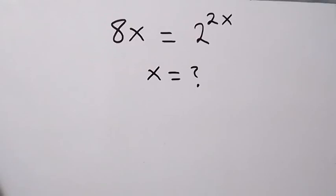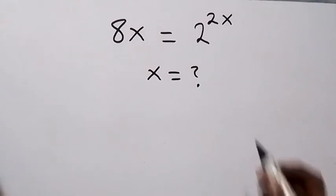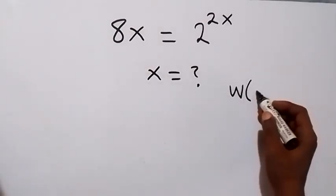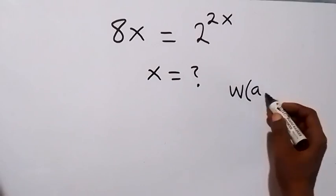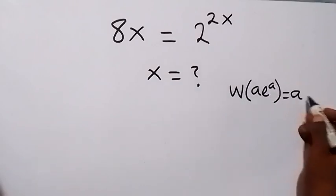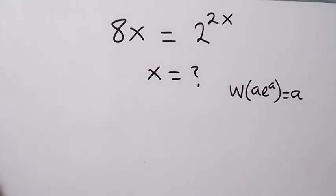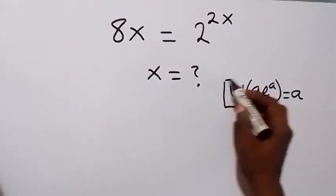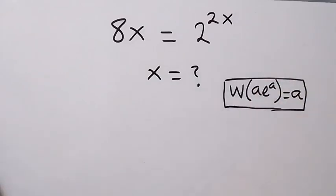Hello, you are welcome. How to solve this nice exponent problem using the W Lambert function. The W Lambert function is where we have W of A times exponent A, which gives us A. Then we apply this in the given problem now.